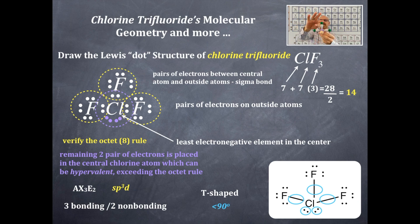It looks like these are 90 degrees, which you would think that normally that would be, but because of these lone pairs of electrons, it's going to compress the bond angle here. So that is something less than 90 degrees.